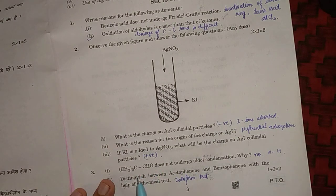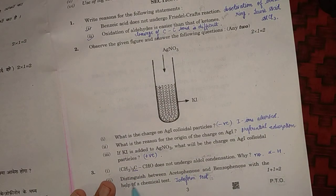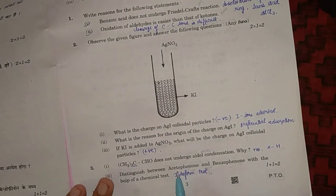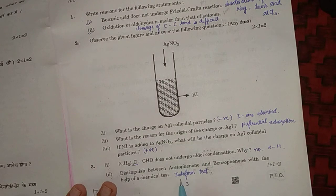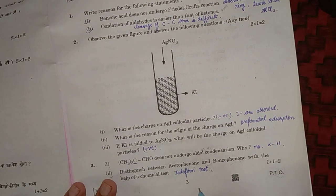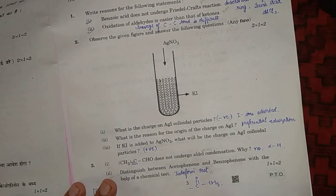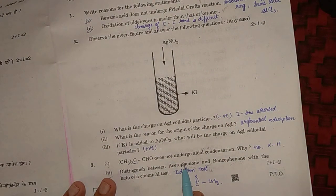Distinguish between acetophenone and benzophenone with the help of chemical test. We can distinguish between them by iodoform test. As acetophenone has COCH3 group attached to it, it will show positive iodoform test and CHI3 will be formed, which is yellow color precipitate.